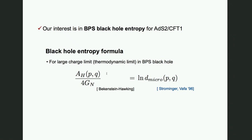Let me briefly review the story of the black hole entropy formula. The black hole entropy formula was first suggested by Bekenstein and Hawking as the area of the near-horizon geometry of the black hole. Later it received a statistical interpretation: Strominger and Vafa showed that counting microstates in string theory reproduces, for the BPS black hole case, the area law of Bekenstein and Hawking. There was also a nice talk by Professor Vafa yesterday.